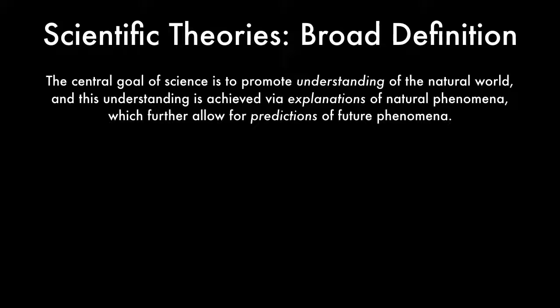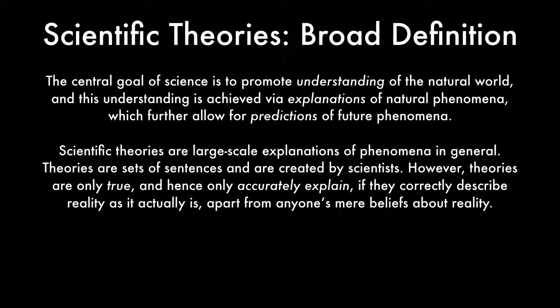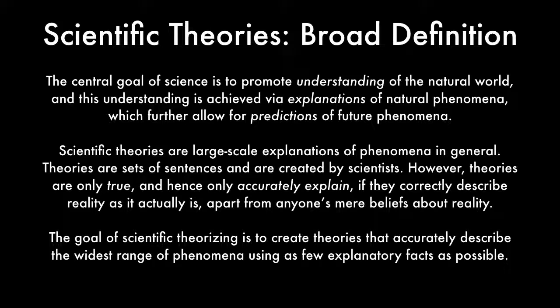The central goal of science is to promote understanding of the natural world, and this understanding is achieved via explanations of natural phenomena, and these explanations further allow for predictions of future phenomena. Thus, scientific theories are large-scale explanations of phenomena in general. Theories are sets of sentences and are created by scientists. However, theories are only true, and hence only accurately explain the world, if they correctly describe reality as it actually is, apart from anyone's mere beliefs about reality. The goal of scientific theorizing, then, is to create theories that accurately describe the widest range of phenomena using as few explanatory facts as possible.